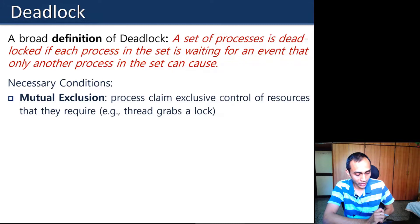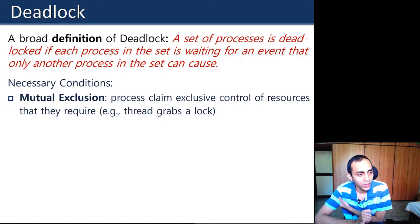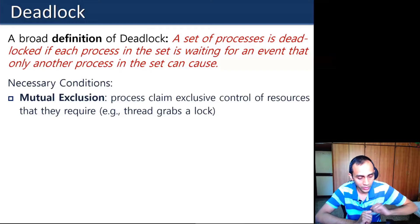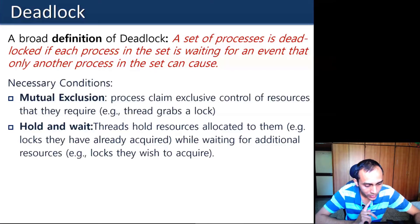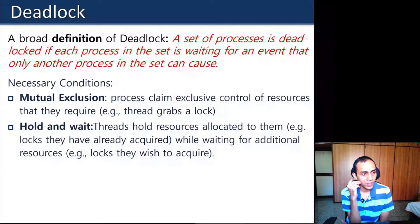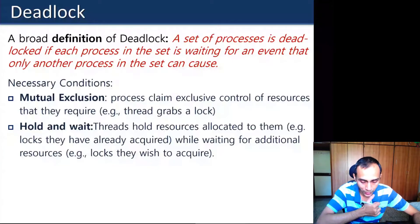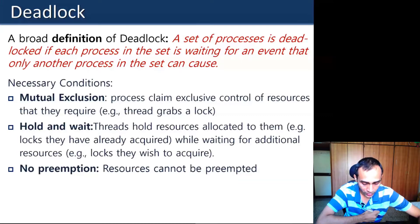Two conditions were recalled: mutual exclusion, which states that the resources for which threads are competing can only be accessed by one thread at a time — exclusive use of a resource, like a lock. The other condition is hold-and-wait, where some processes or threads have already acquired some resources and are still waiting for others held by other processes. The third condition is no preemption — once a resource has been given, it cannot be forcibly taken back, though a process may voluntarily release it.